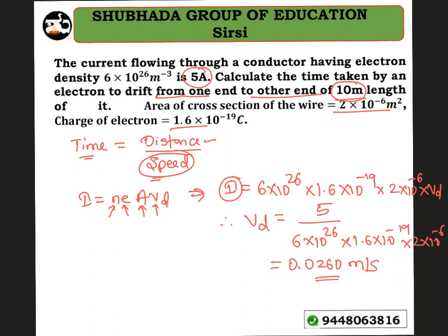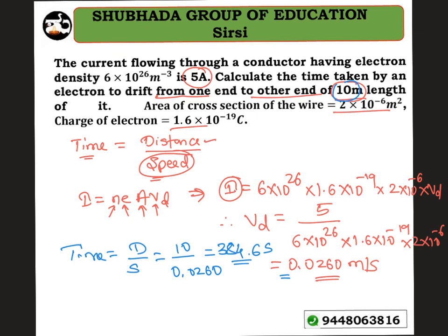Now that we have the speed, we can calculate the time. Time = distance / speed = 10 meters / 0.0260 meters per second. Simplifying this, we get the time as approximately 384.6 seconds. So that is the answer to this problem.